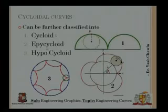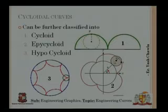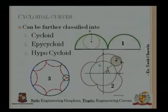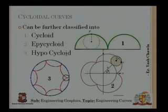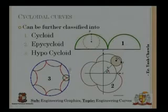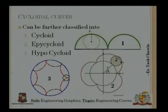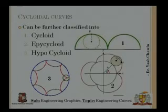For an epicycloid, instead of rolling on a line, the circle with point P rotates on the exterior of another circle, and the path traced by P is called an epicycloid. For a hypocycloid, the circle rotates on the interior of the base circle rather than the exterior. The point P traces a curve called a hypocycloid.